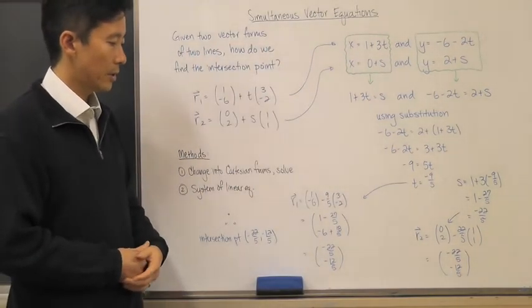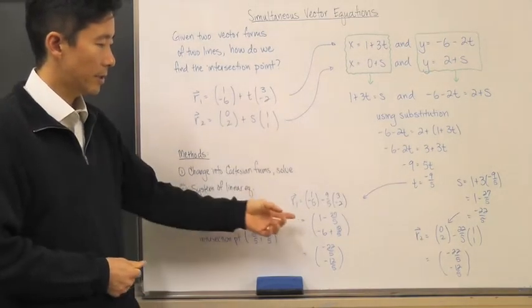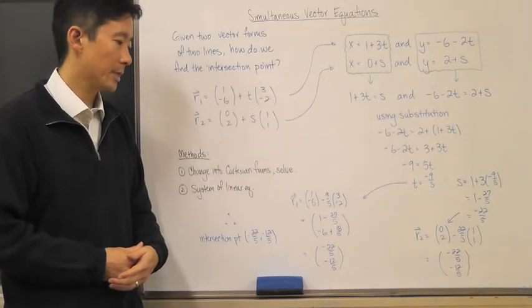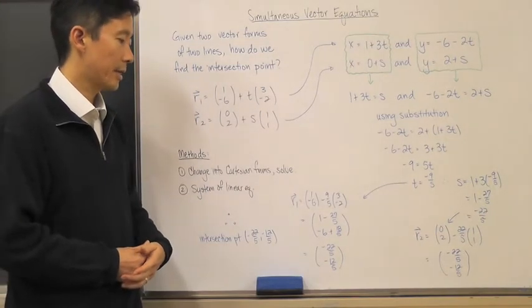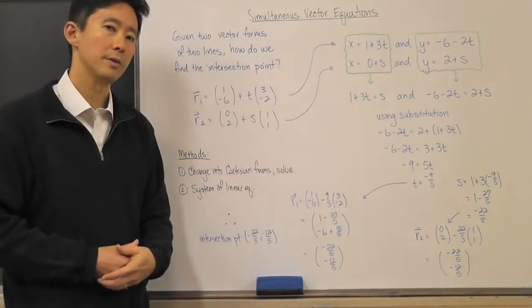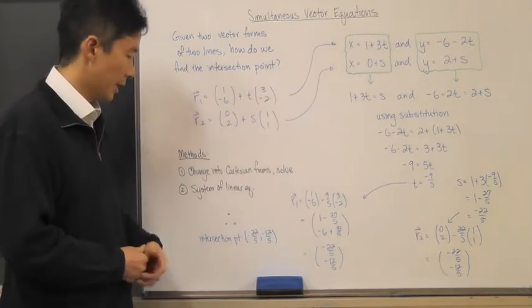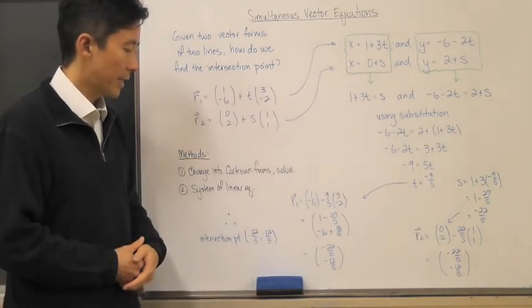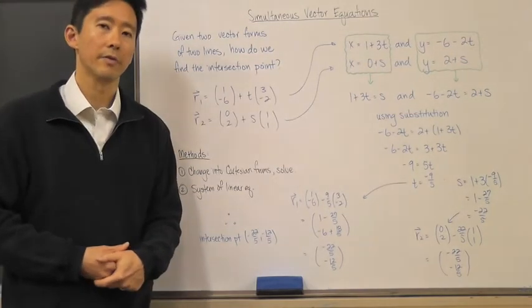What that means is that those two vectors, r₁ and r₂, are pointing to the same point. That point is the intersection point of the two lines that you started with. Therefore, the intersection point is (-22/5, -12/5).